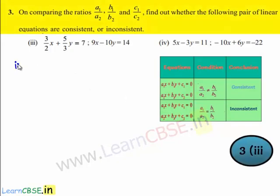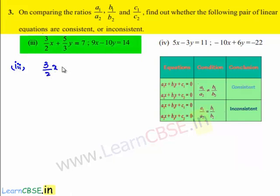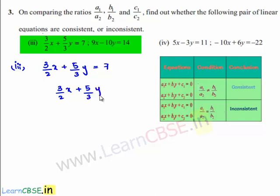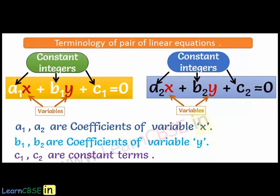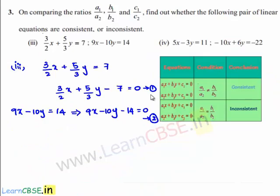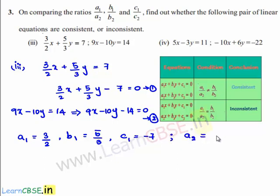Coming to the third bit, the given set of linear equations are (3/2)x plus (5/3)y is equal to 7. This can be written as (3/2)x plus (5/3)y minus 7 is equal to 0. This is equation number 1. The second equation is 9x minus 10y is equal to 14, which can be written as 9x minus 10y minus 14 is equal to 0. Comparing with the standard equations, we get a1 is equal to 3/2, b1 is equal to 5/3, c1 is equal to minus 7, a2 is equal to 9, b2 is equal to minus 10, and c2 is equal to minus 14.